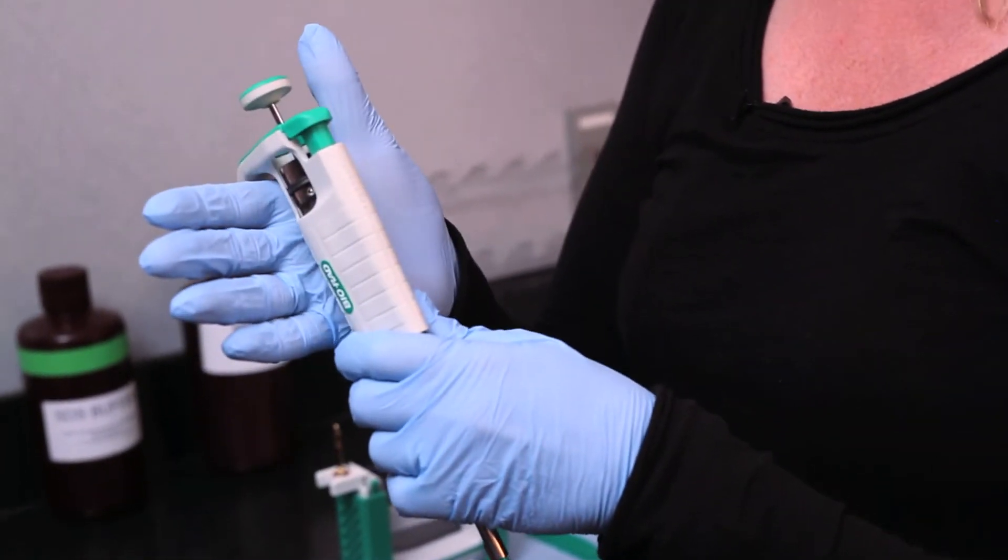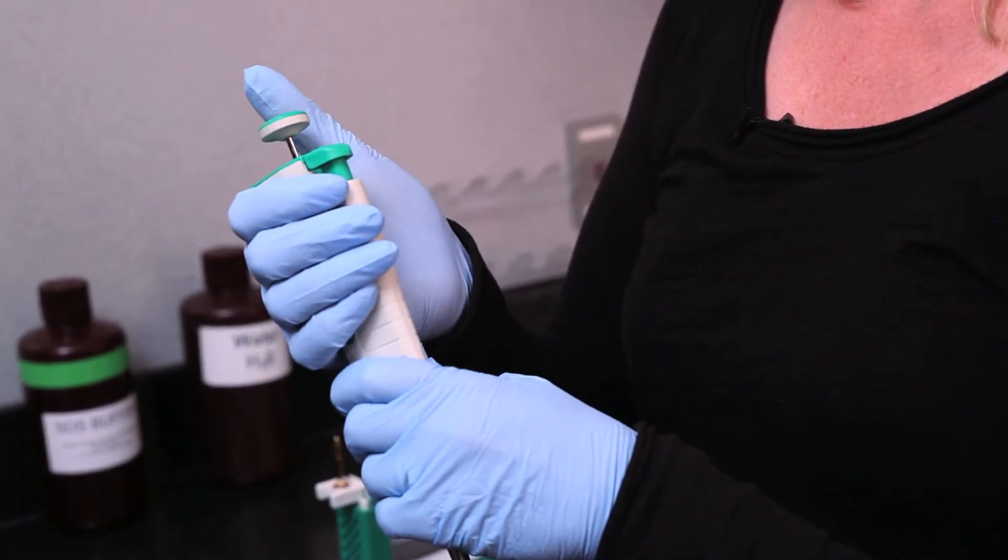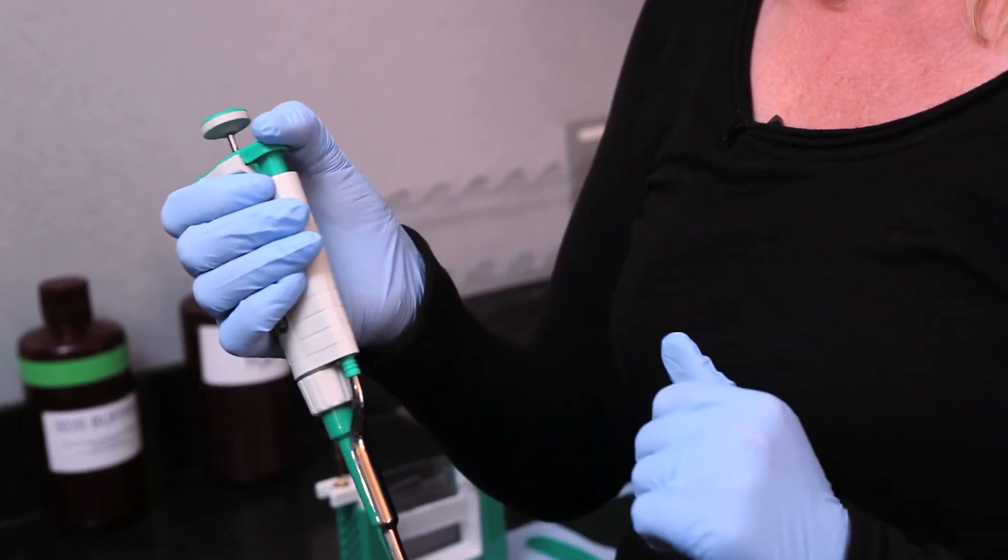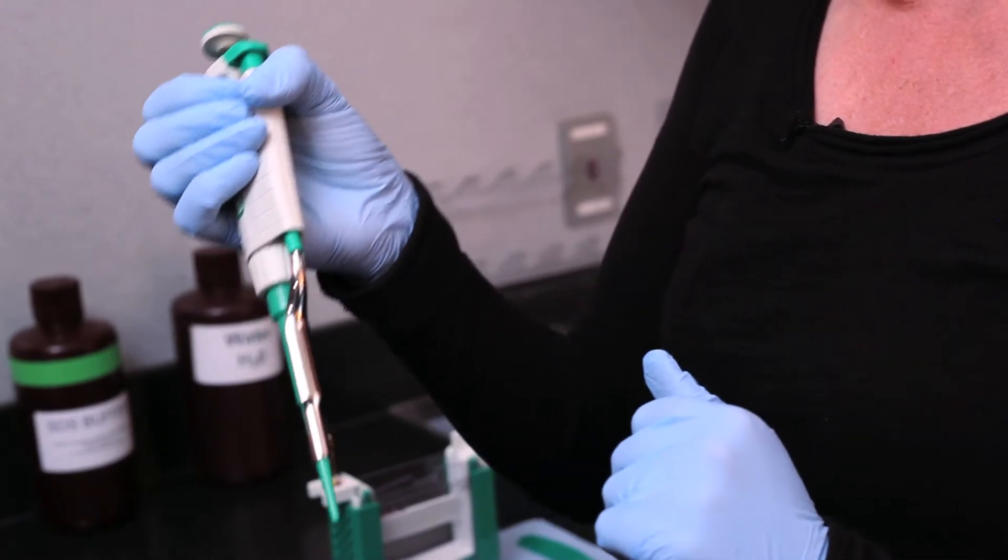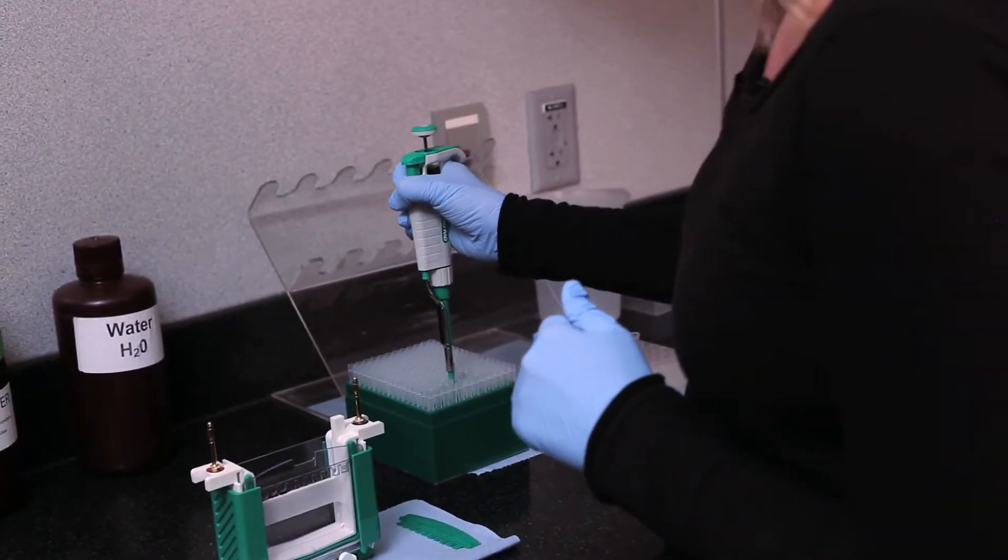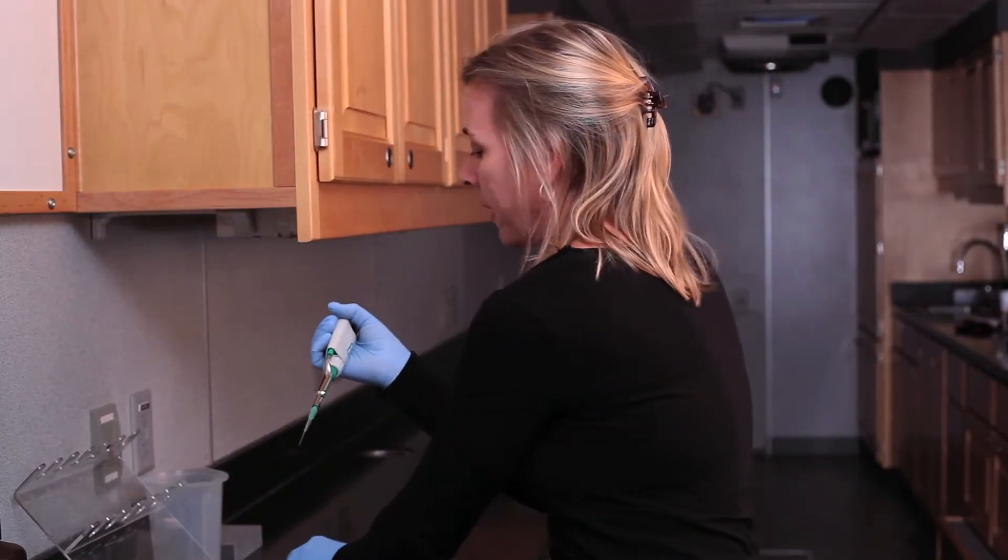I'm going to place my pipette in my hand so that my thumb can access both the plunger button as well as the eject button. The first thing I'm going to do is place a pipette tip onto my pipette and then I'm going to pick up my sample.